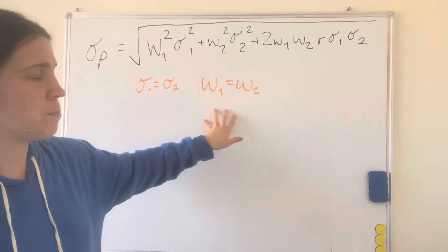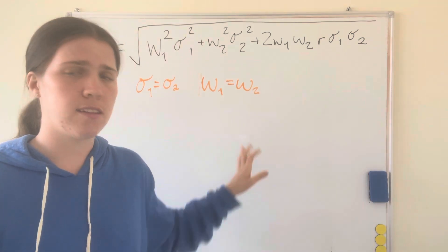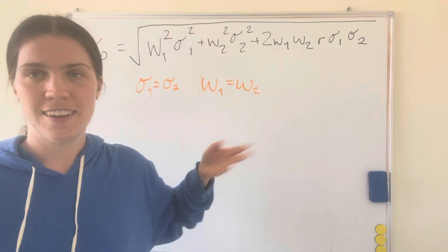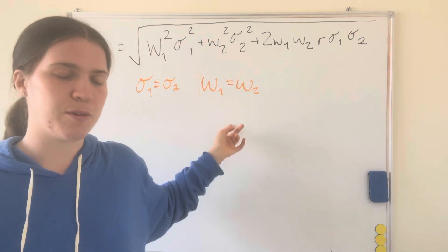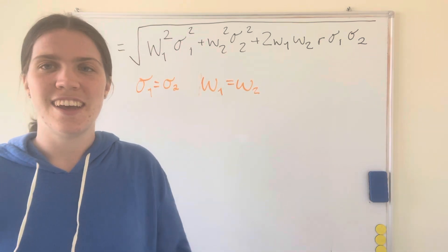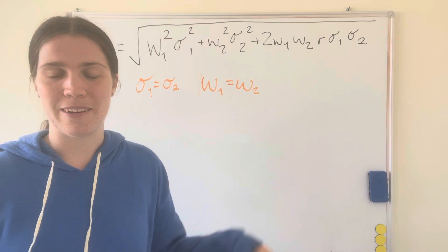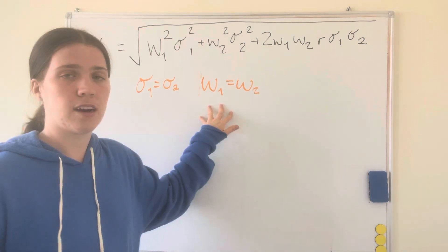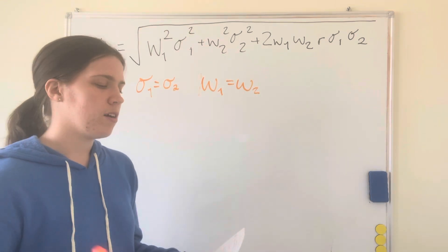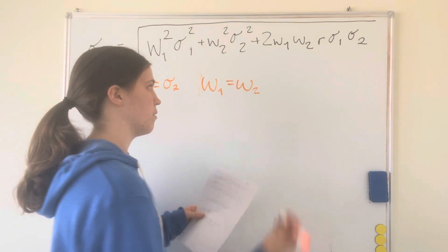And since w equals 1, like w1 plus w2 equals 1, if they're the same they will be 0.5, so they're invested equally. And I will also know that r is negative 1.